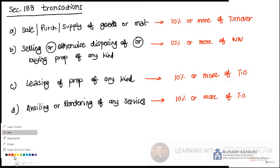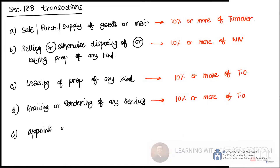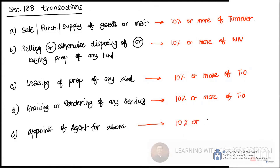Be careful with all these limit points in the exam. Then, basically, for the appointment of an agent — whether for purchasing property, materials, disposing of property, leasing property, or rendering services — in all of these, if you are appointing an agent, your limit is 10% or more of the turnover.